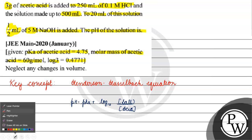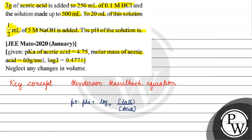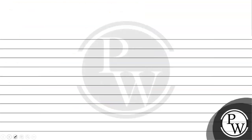Now, if we talk about this question, we have acetic acid and HCl. Let's see how much acetic acid has been given. We have 3 grams divided by the molar mass of 60 grams per mole, which gives us 1/20 moles of acetic acid.